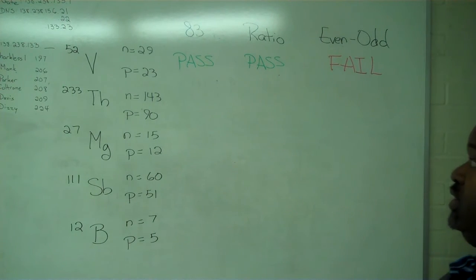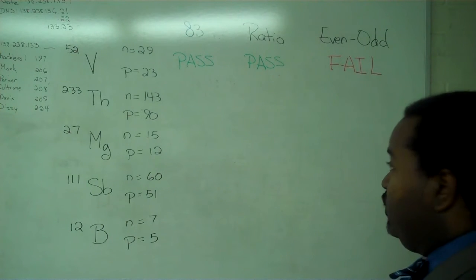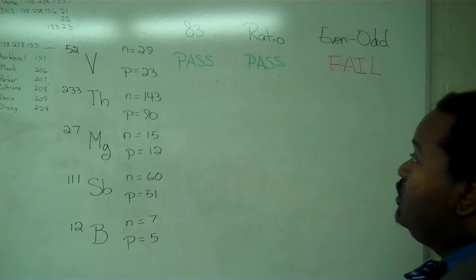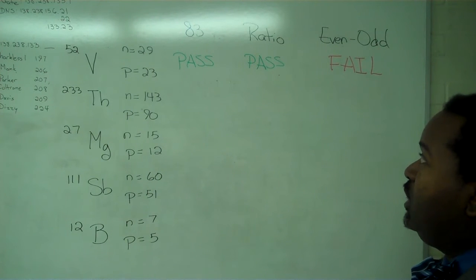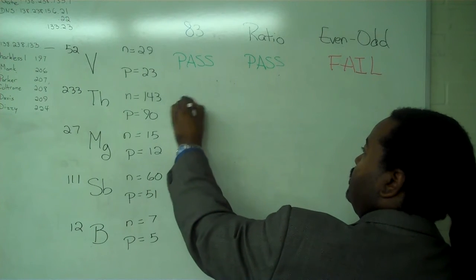And so now we can step through each one of these tests for all of these, given that we have the number of neutrons and number of protons. So the 83 test, 90 is larger than 83. So this is a fail.